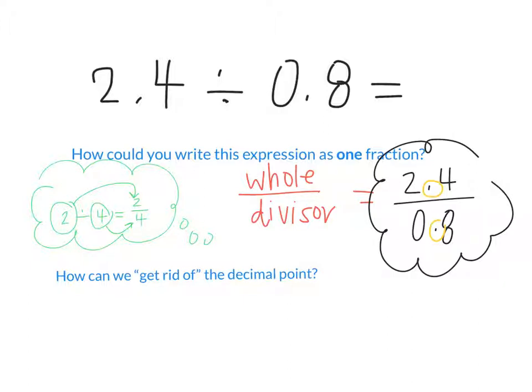Let's look at the 2.4 first. If we wanted to quote unquote get rid of that decimal point, if I have 2.4, if I want to get rid of that decimal point, do I have to move it to the right or to the left? If I were to shift it one spot to the right, wouldn't that be getting rid of the decimal point? What math operation do I have to do to do that? I'm multiplying by 10.